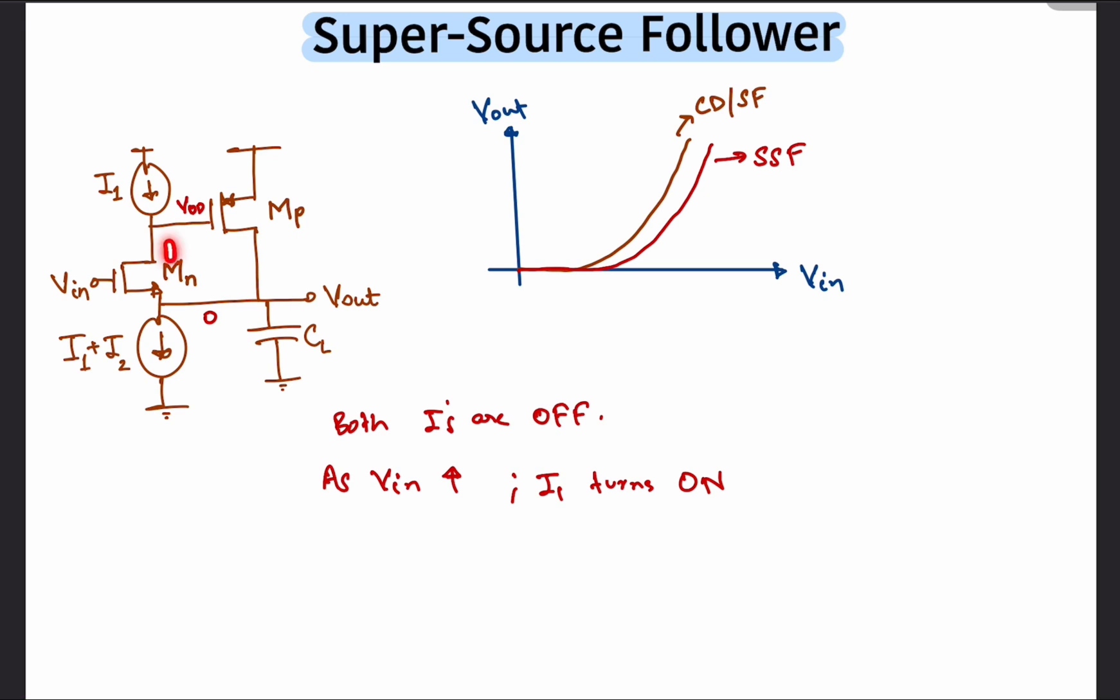So as Vn increases, the gate voltage of Mp starts to reduce from Vdd, which causes Mp to turn on. Now only when the source to gate voltage of Mp is enough for it to drive a current of I2 will the circuit function properly.